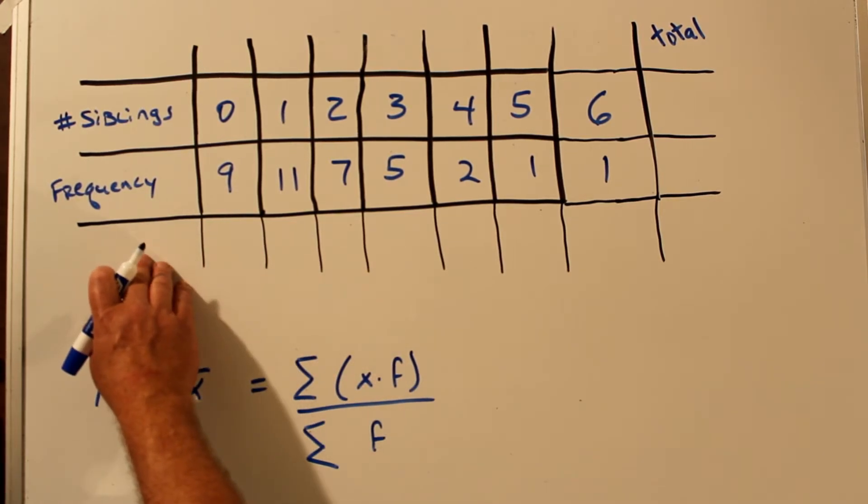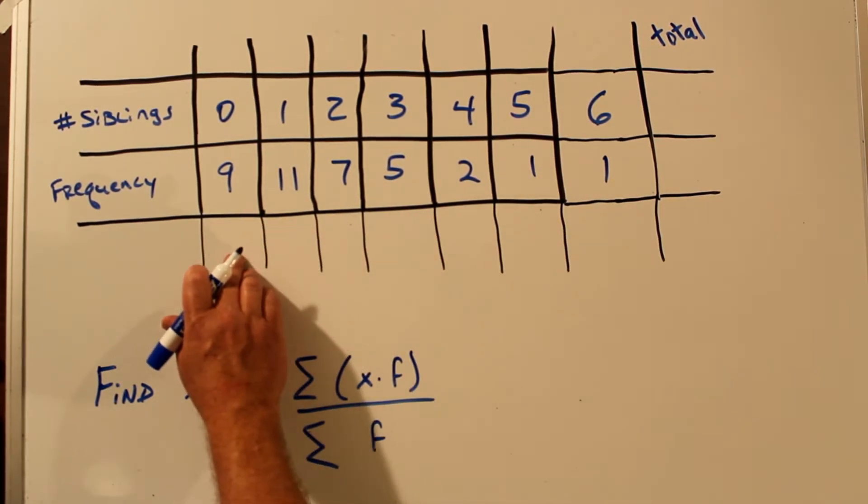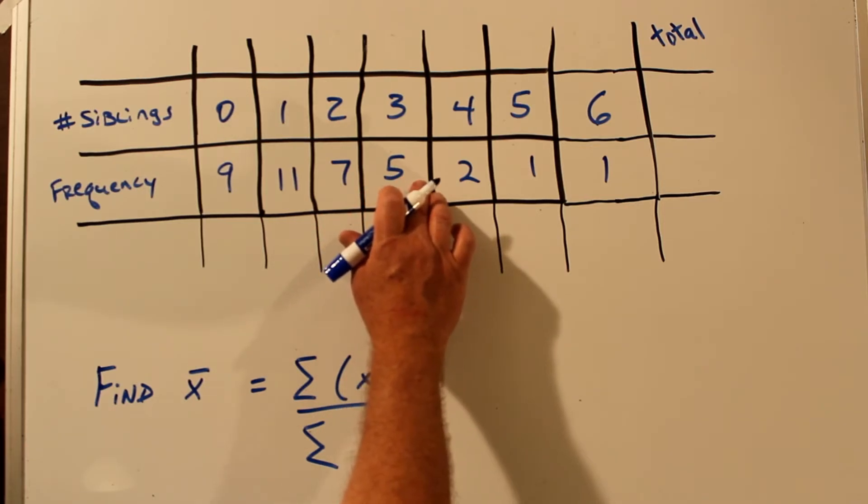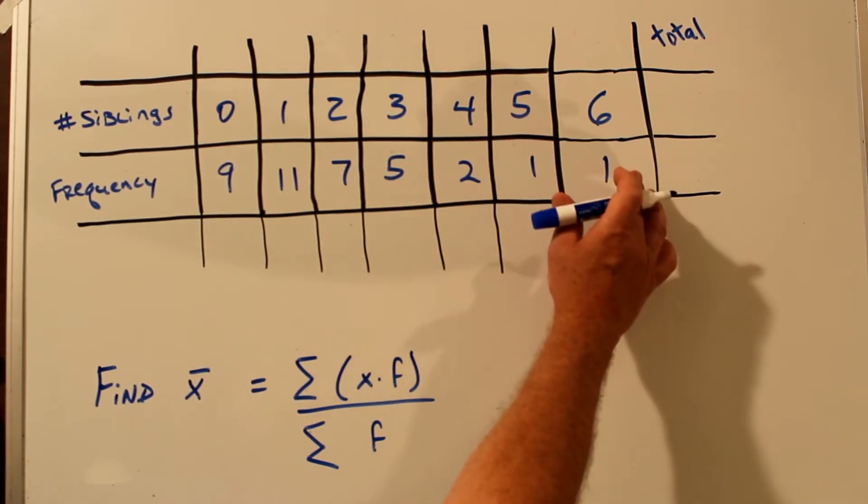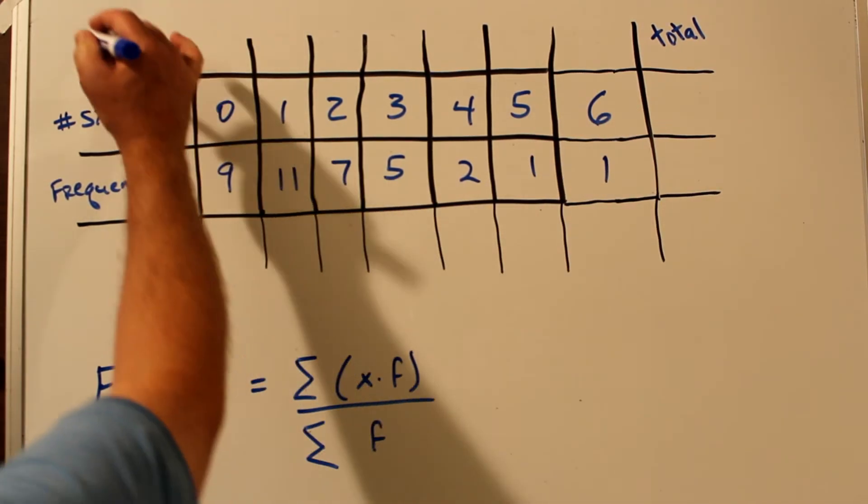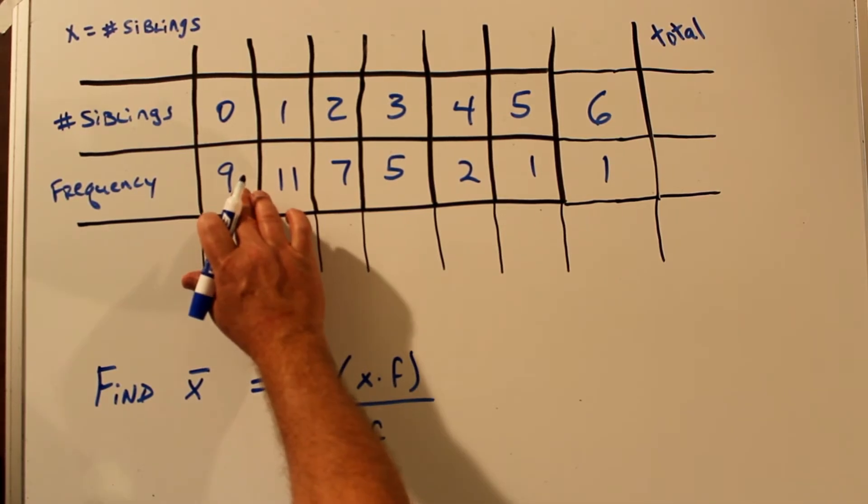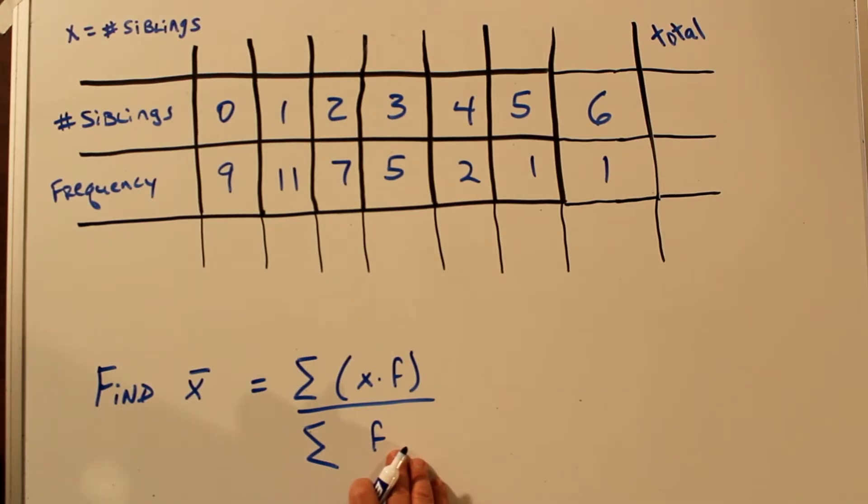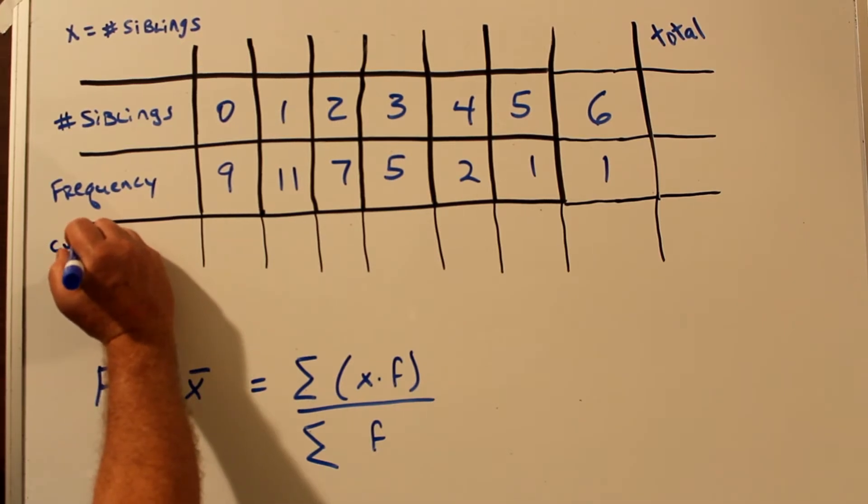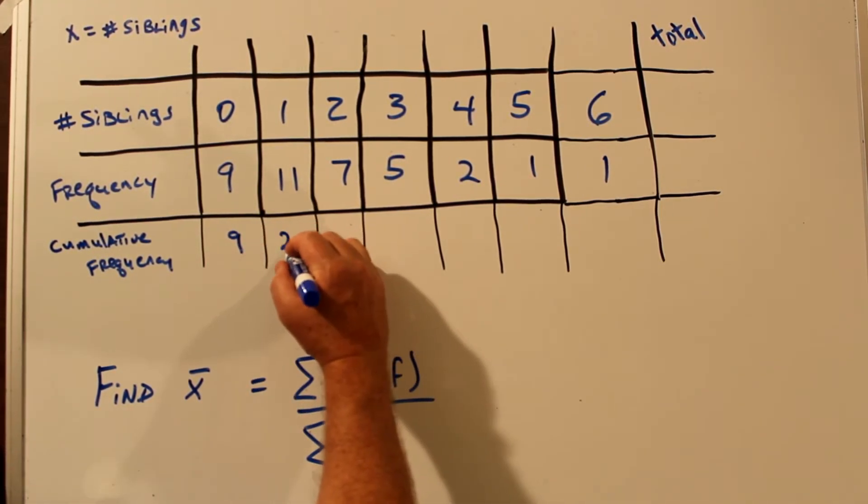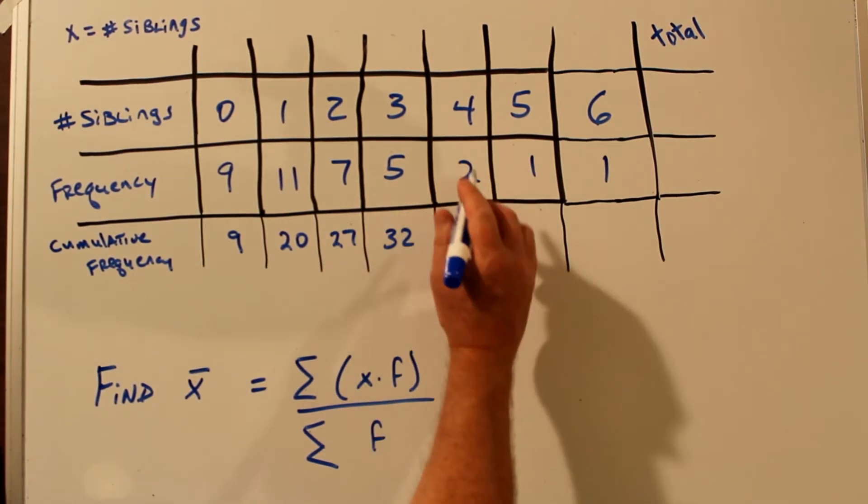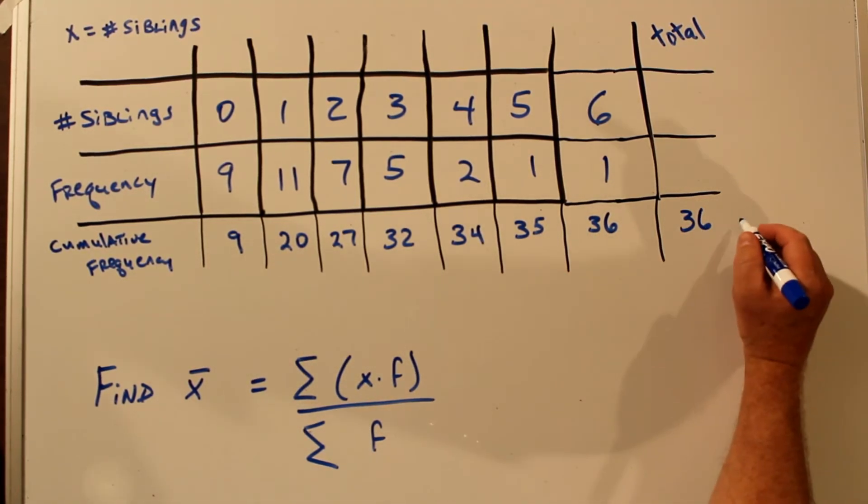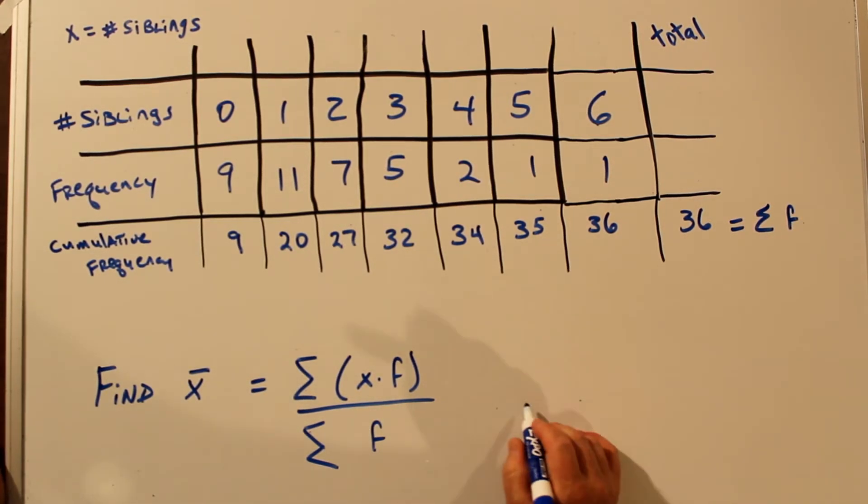A number of people were polled and asked how many siblings do you have, anywhere from 0 to 6. And this was the number that reported in each category. 9 said they had no siblings. 11 said they had 1. 7 had 2. 5 people reported they had 3. 2 said they had 4, and 1 each for 5 siblings and 6 siblings. So X is the number of siblings, and the frequency is how many people reported having this number of siblings. So to find the average number of siblings, let's first find the total frequency, or cumulative frequency, like we did before. We'll start out with our 9, add 11, be 20, plus 7 is 27, 32, plus 2 is 34, plus 1 is 35, plus 1, 36. So we have 36, the sum of all the frequencies. So we already know the bottom number.